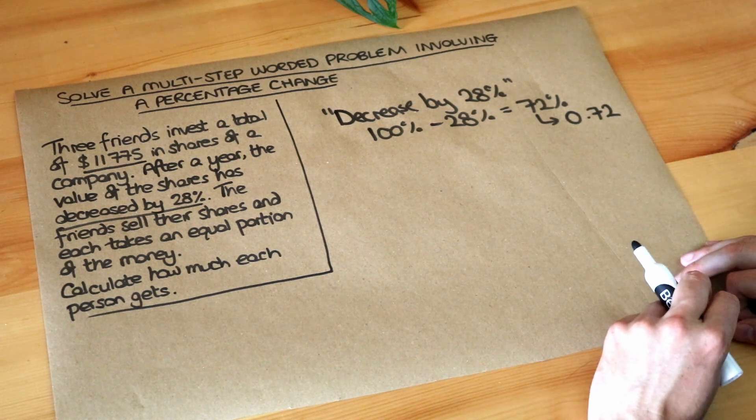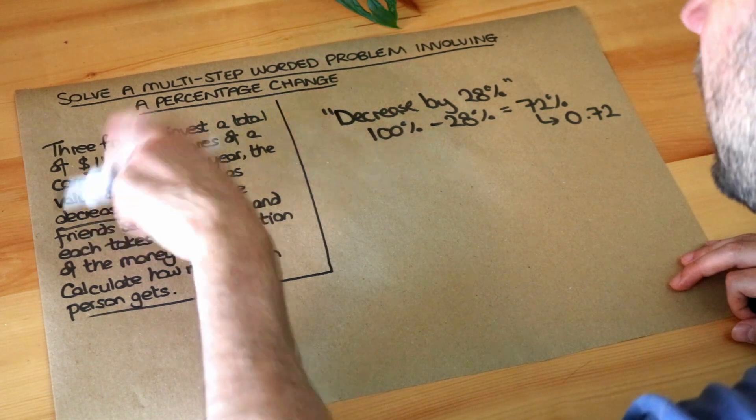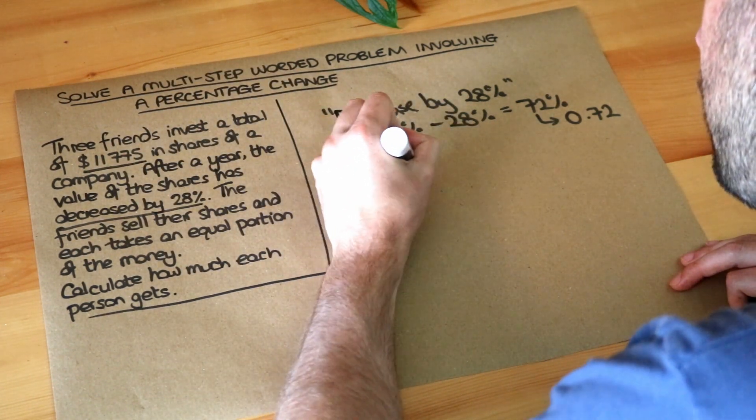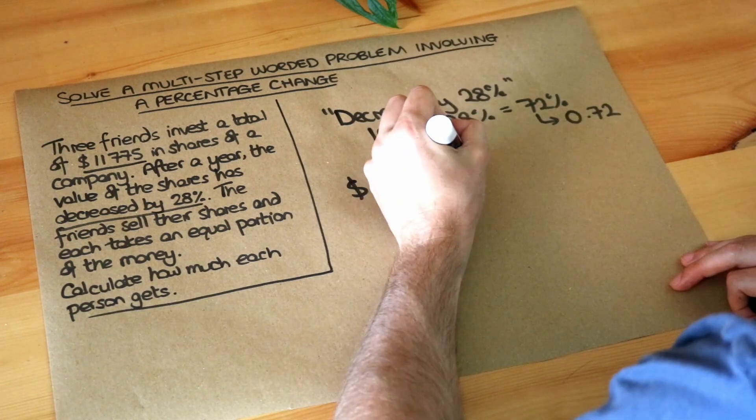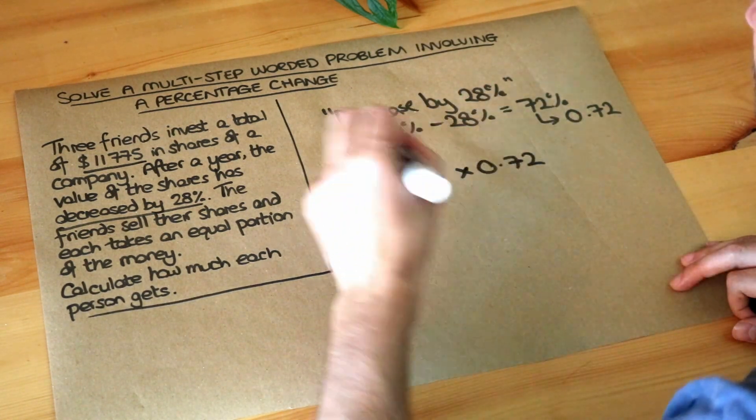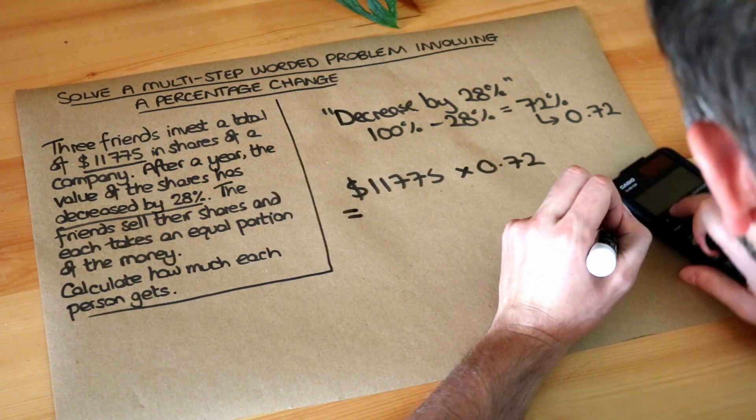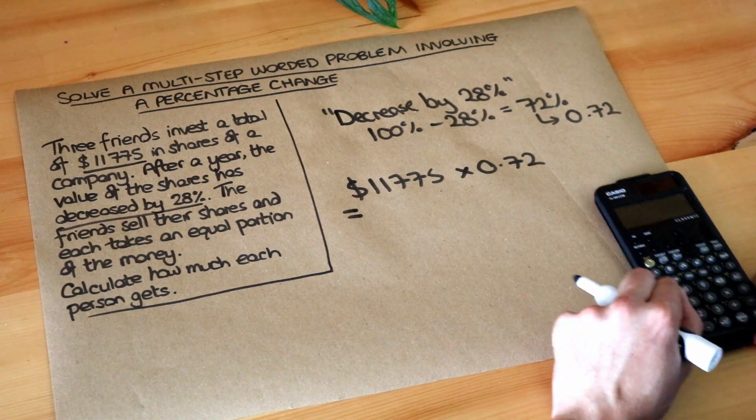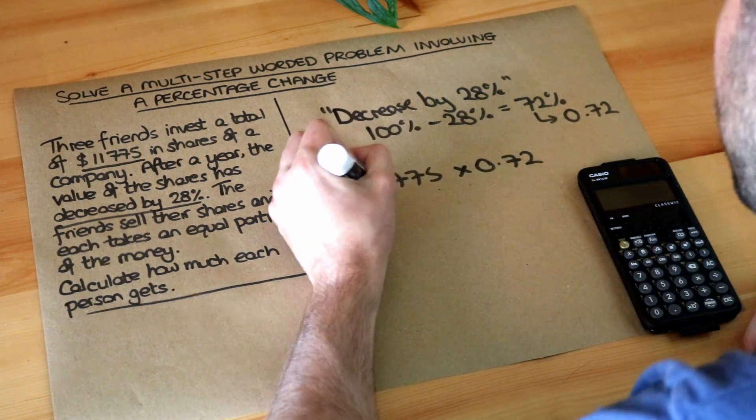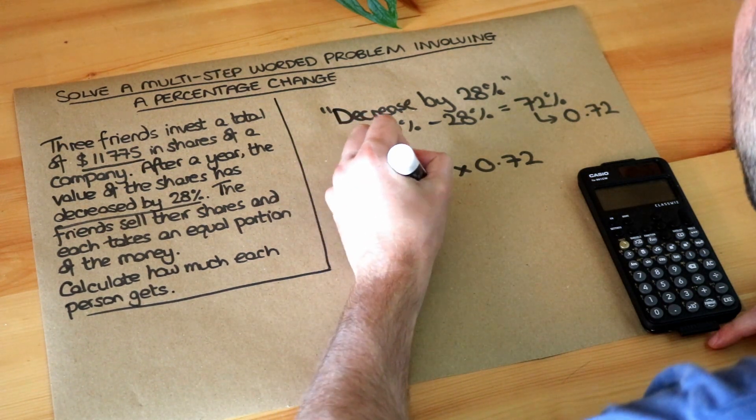So the decimal multiplier here is 0.72. That means we need to multiply the 11,775 by that decimal multiplier to have the effect of reducing by 28%. So I'm just going to do that on my calculator. 11,775 times 0.72, and that means the new value of the shares is $8,478.